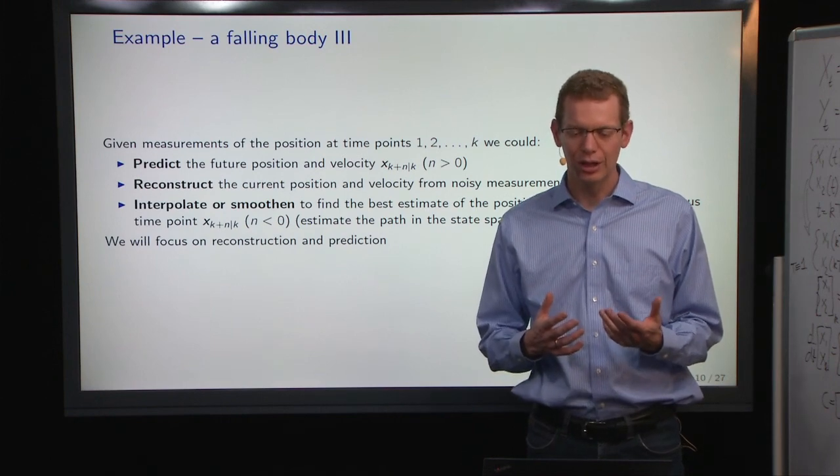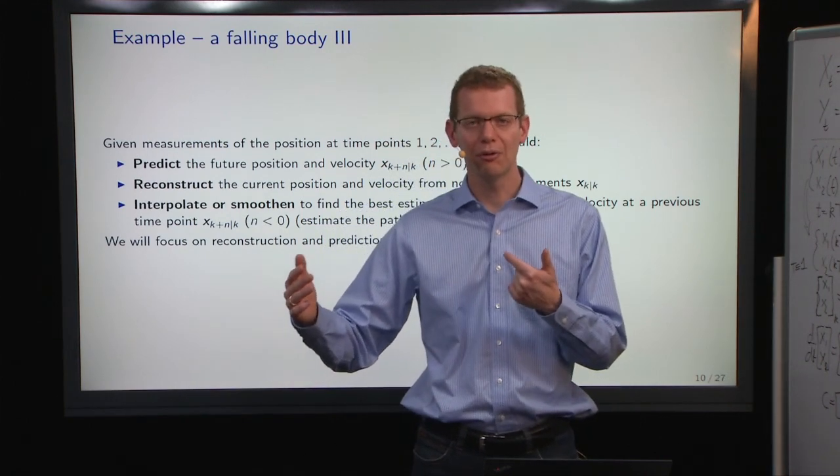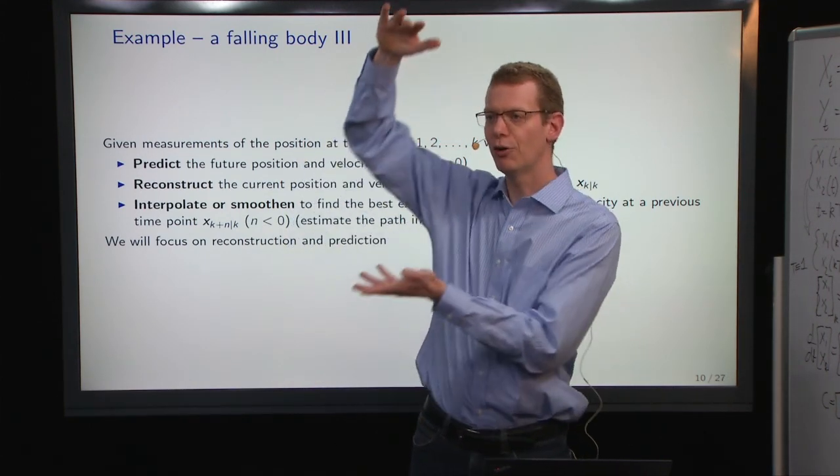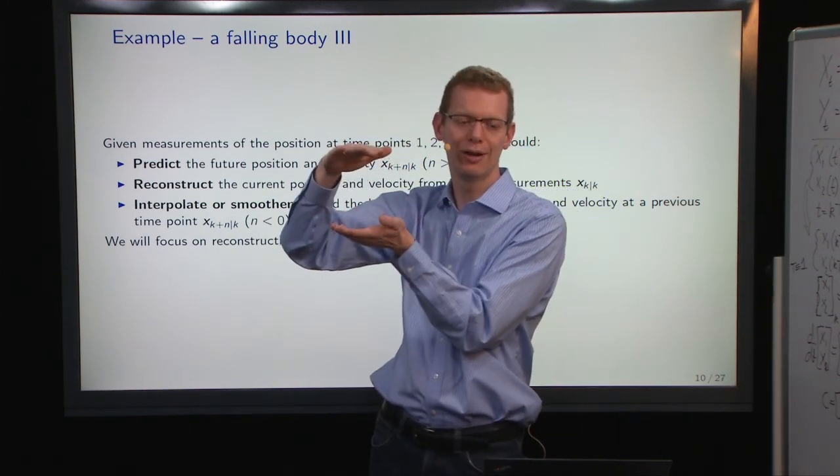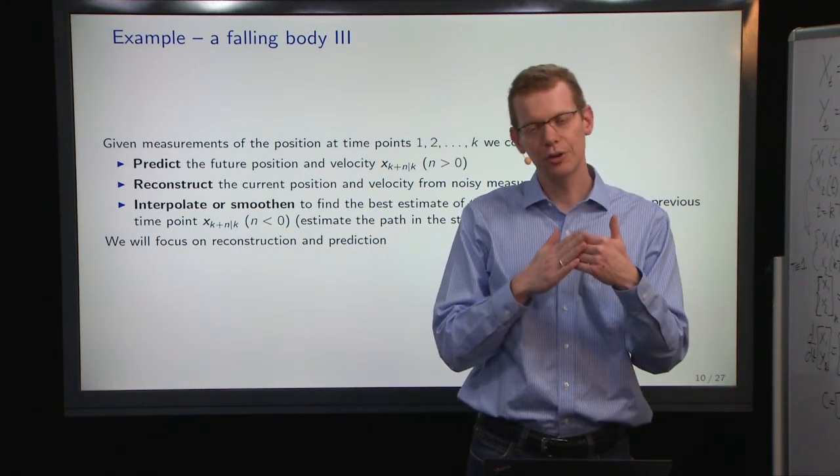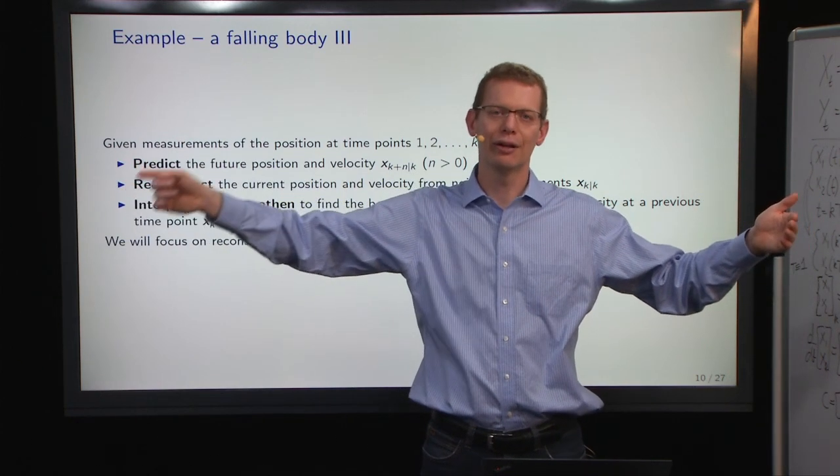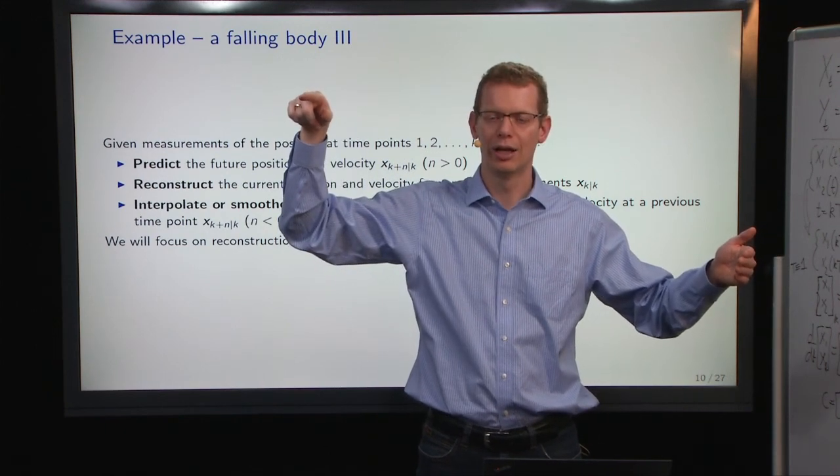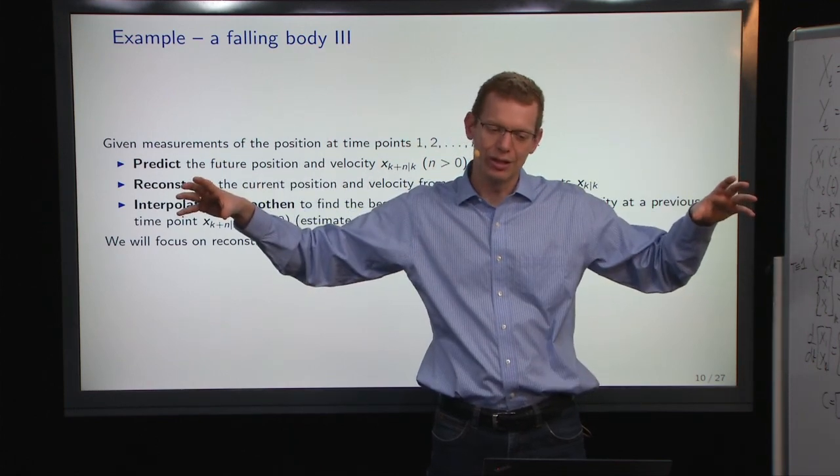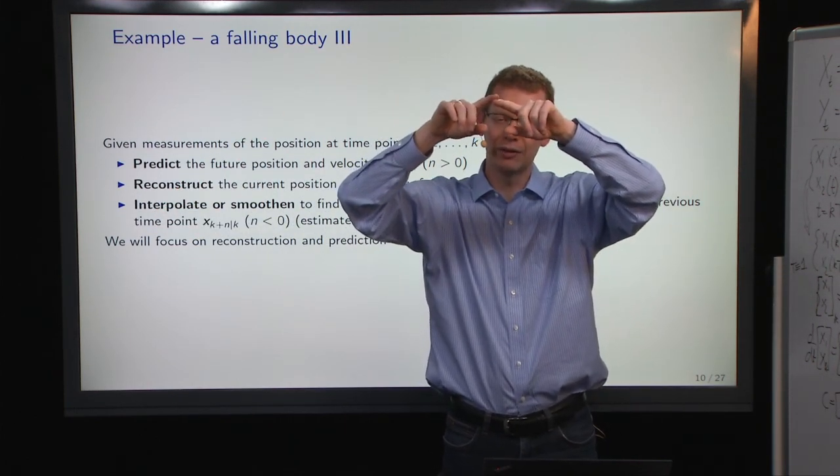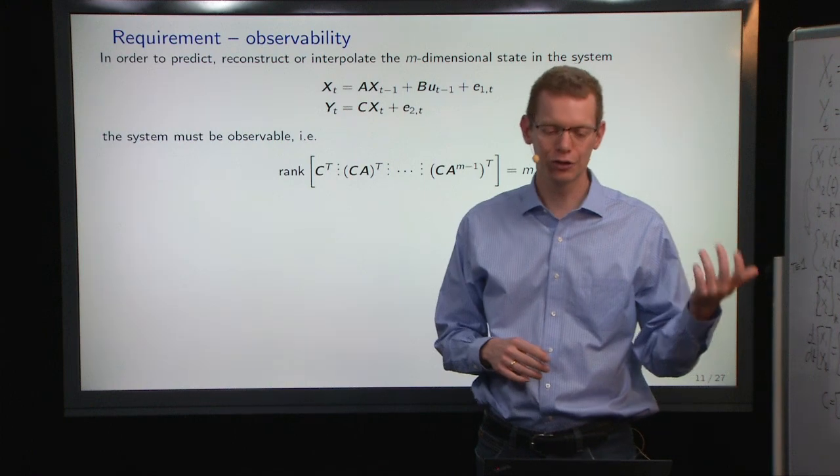So what we want to do with that system is to, first of all, we want to predict what happens in the future, but we also want to, whenever we get a new observation, we want to say that before we thought we were maybe somewhere here, but now that we got an observation, we know that we are probably around here. So that's what you do forward in time, but there's also, when you're looking at an entire time series, then you may want to have an estimate of what happened somewhere in between. And then you can do what is called smoothing or filtering or interpolation to see, well, what is best estimate given both the previous and the future observations. We will focus on the first two parts.